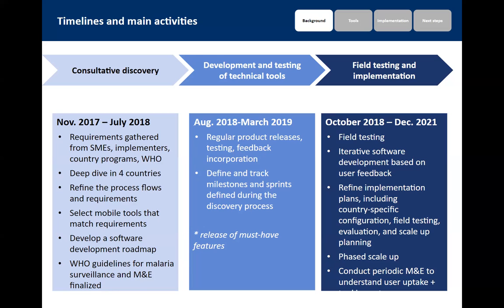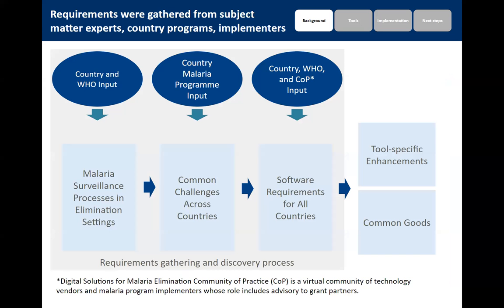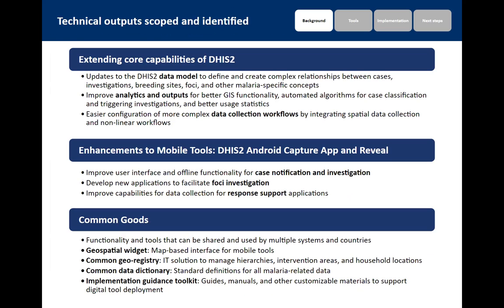This is how requirements were gathered — looking at different surveillance processes in different countries, trying to identify common challenges across countries, and feeding this into software requirements both for specific tools and for common goods. We focused on improving DHIS2 web, DHIS2 Android, and the Reveal tool, as well as some common goods. These slides will also be uploaded to the community of practice after this session.